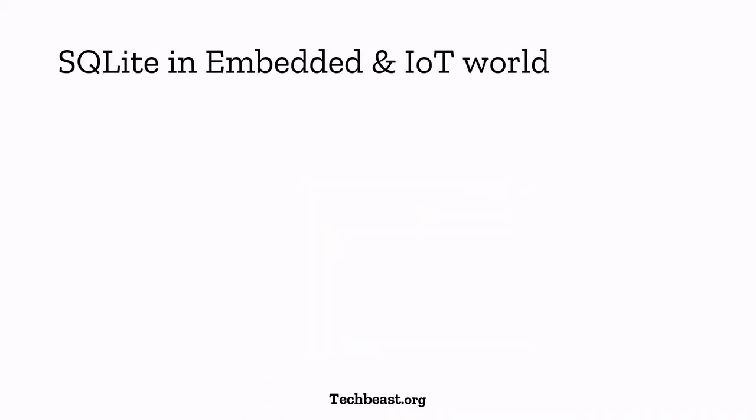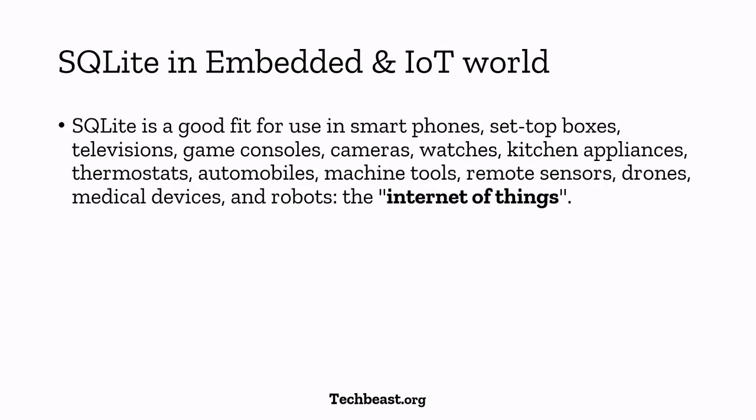So how is SQLite useful in embedded devices and the IoT world? SQLite is a good fit mainly for smartphones — all Android devices that need local storage are using SQLite. A lot of devices are running SQLite, including set-top boxes, televisions, game consoles, cameras, watches, kitchen appliances, smart toasters, refrigerators, and remote sensors. Almost all IoT devices can make use of SQLite depending on the application and your needs.